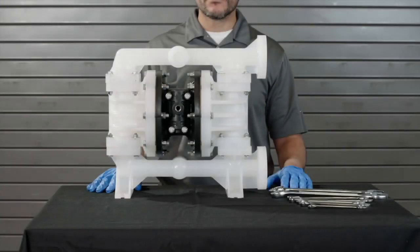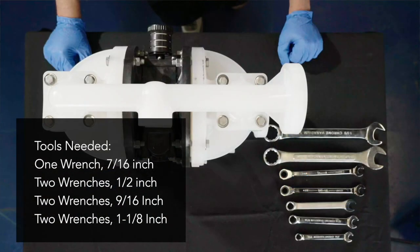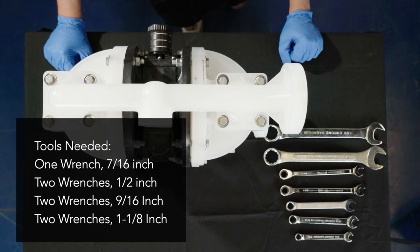The following tools found in section 7 of your A100 plastic 1-inch pump manual will be the only tools required for servicing your pump. The following steps outlined in this video will help you disassemble your A100 plastic pump for service.